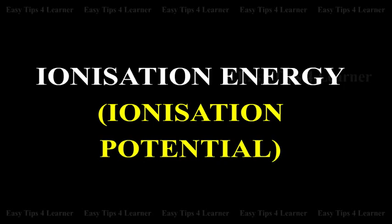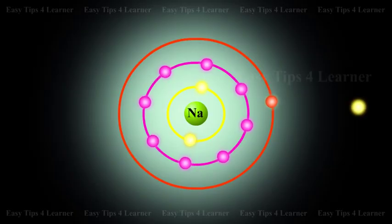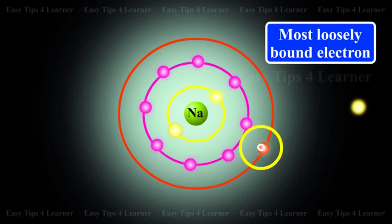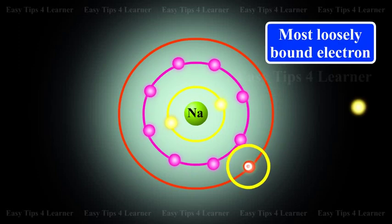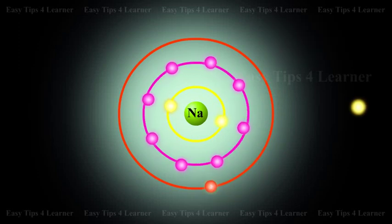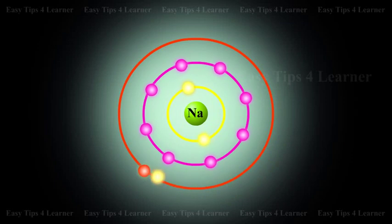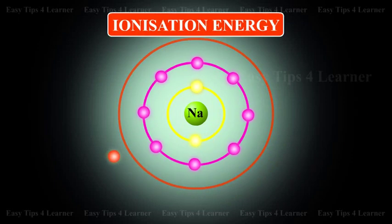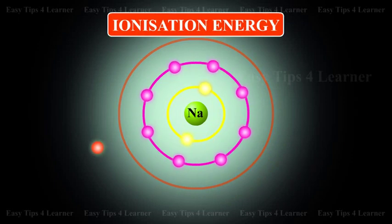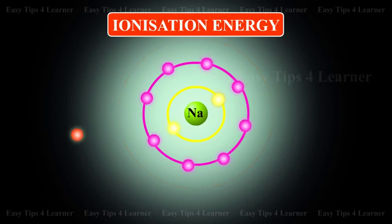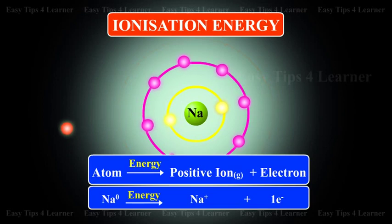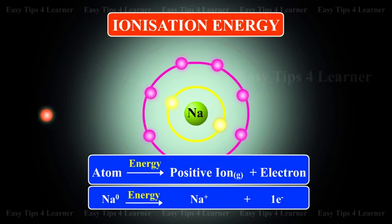Ionization energy, ionization potential. The energy required to remove the most loosely bound electron from an isolated atom in the gaseous state is known as ionization energy. An atom gives a positive ion plus an electron.